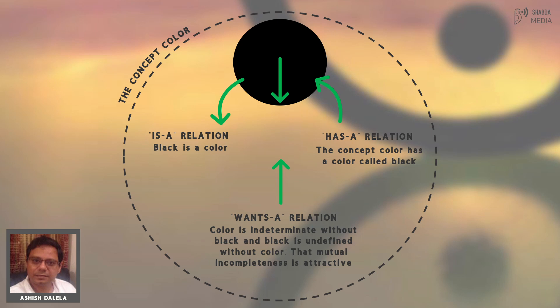The Paramatma form in the material atoms is temporary because the material world is temporary. However, in Srimad Bhagavatam, it is said that the absolute truth is understood in three ways as Brahman, Paramatma, and Bhagavan. The Bhagavan form is transcendent. The Paramatma form is imminent. And Brahman is when God and His Shakti are not individuated, so immanence and transcendence don't arise.